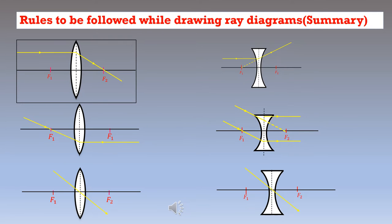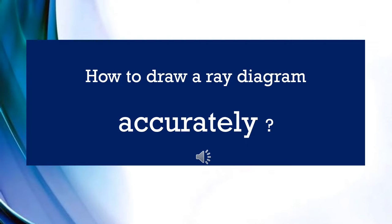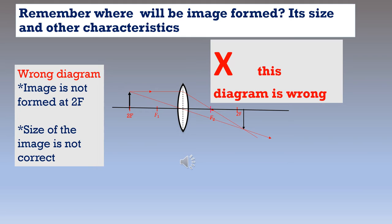Without any deviation it passes. In an accurate ray diagram, the position of the image, size of the image, and other characteristics of the image should come out correctly. For that we have to be careful about some important things. Next we can study how to draw a ray diagram accurately. The first point we have to remember is the position of the object and image — we have to be thorough with that.